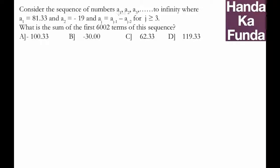We are given a sequence of numbers which goes to infinity where the first term a1 is 81.33, the second term a2 is -19, and any term aj is the difference of the previous two terms: aj-1 minus aj-2.